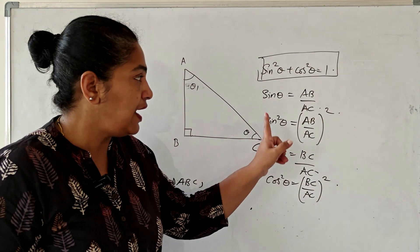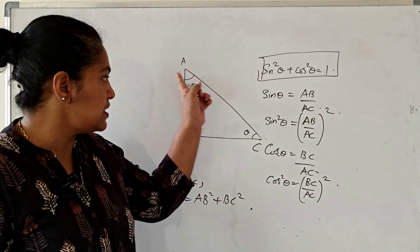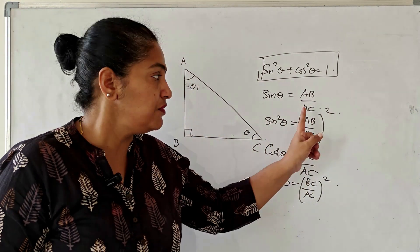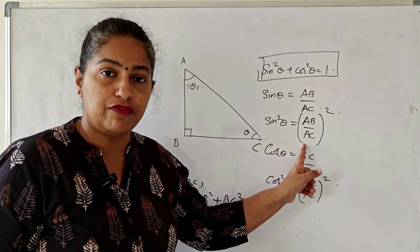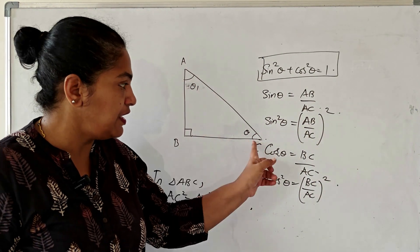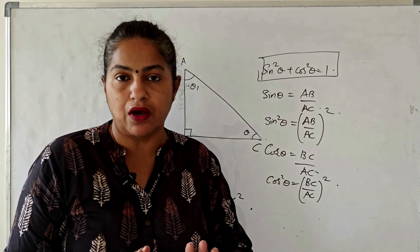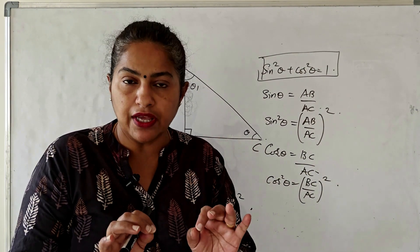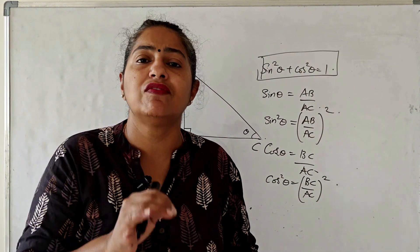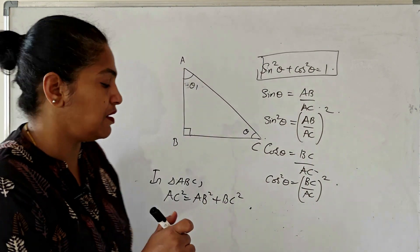From this triangle, I can write sin θ as opposite side by hypotenuse, so sin²θ becomes the square of that. Cos θ is adjacent side by hypotenuse, and cos²θ is the square of that. Now in a right angle triangle, the first theorem we always apply is the Pythagoras theorem.